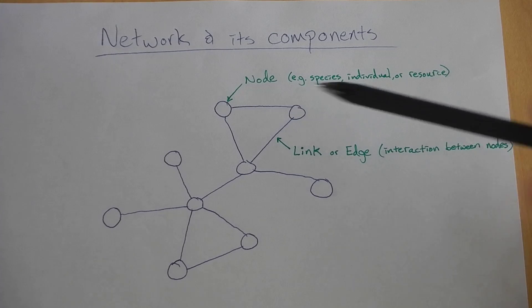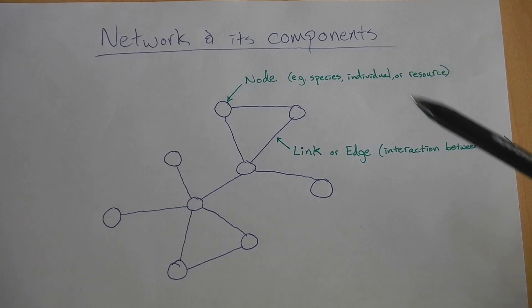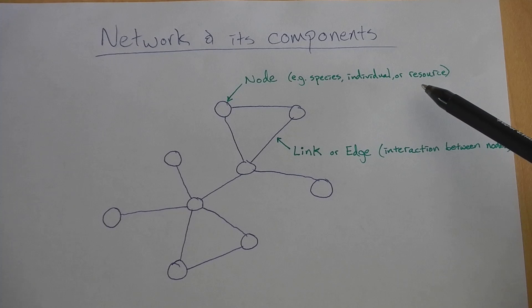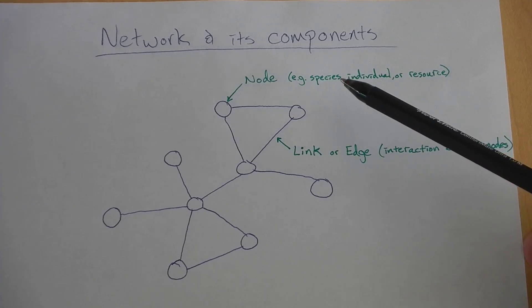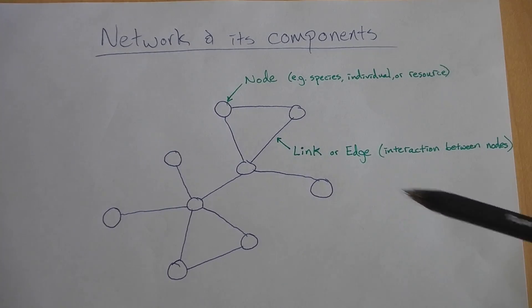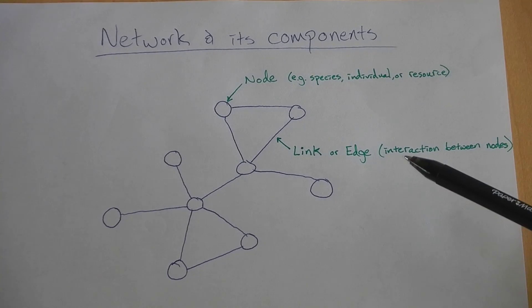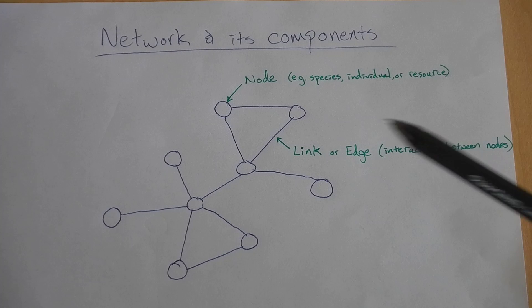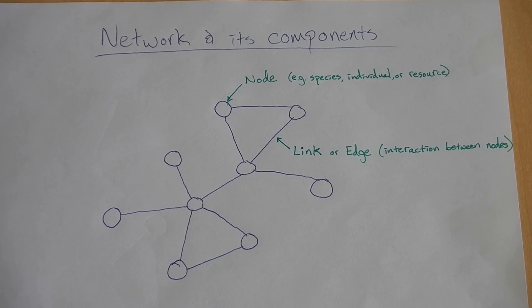A node in an ecological network, for example, might represent a species, individual, or resource, even though most of the examples you'll see consist primarily of species. Whereas a link or edge indicates an interaction between two nodes within a network.